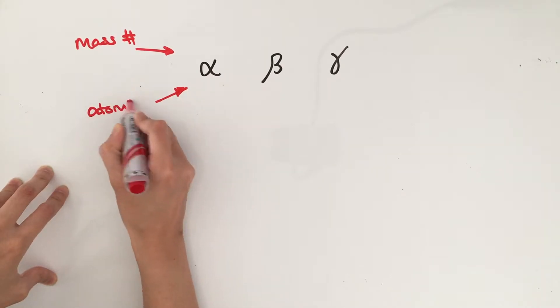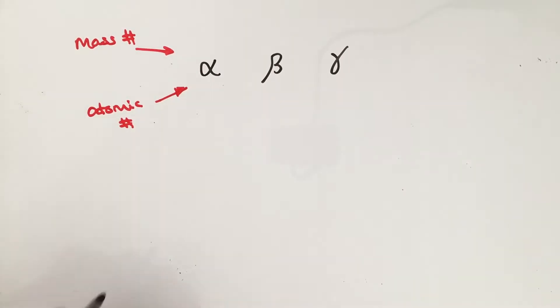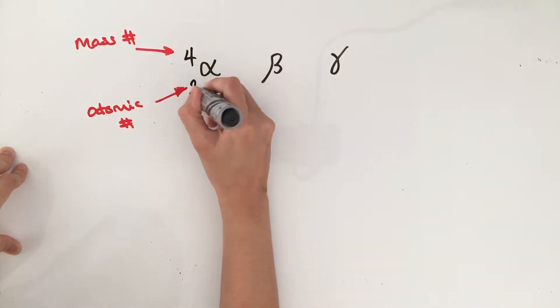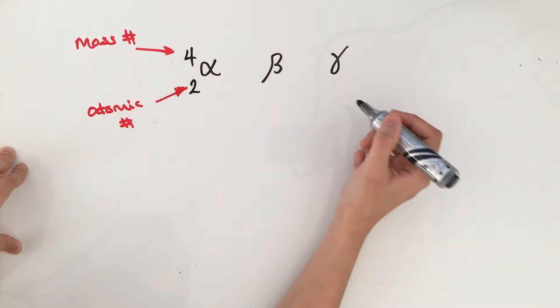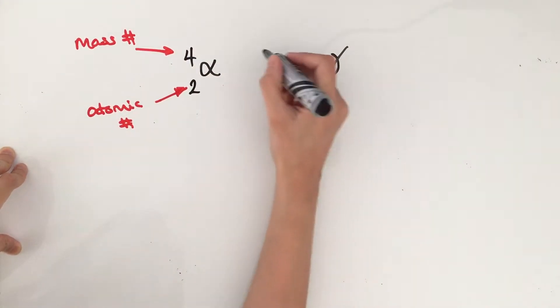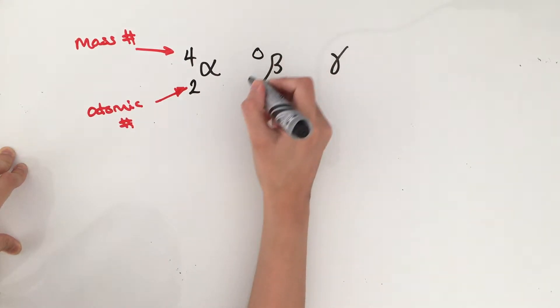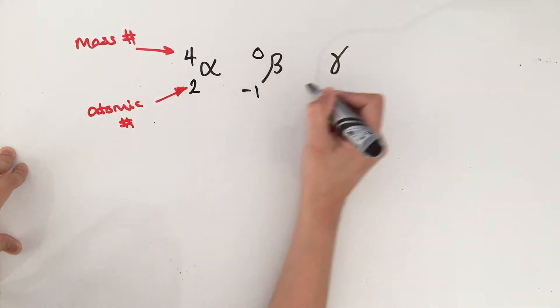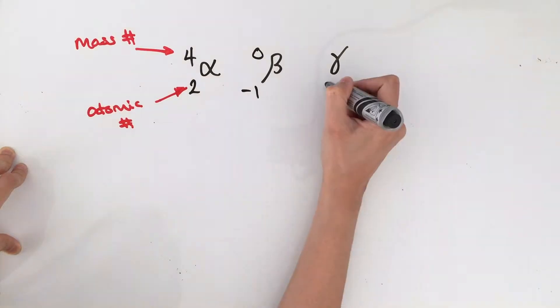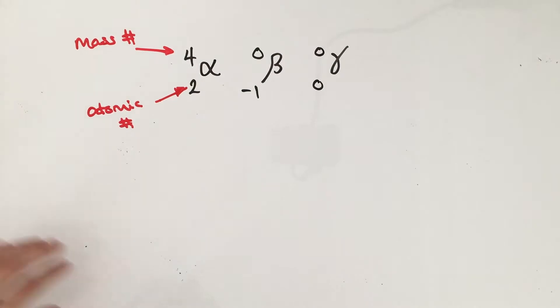For alpha particles, we know that there are four nucleons, so its mass number is four. Its atomic number is two because it has two protons. Beta particles are electrons, so its mass number is zero, and its atomic number is minus one. Since gamma is just a wave, its mass number is zero, and its atomic number is also zero.